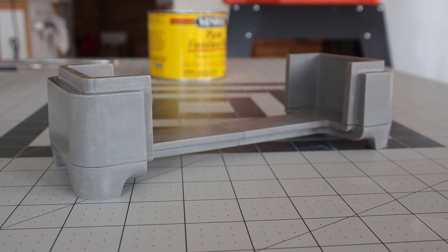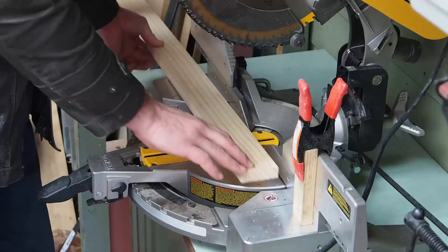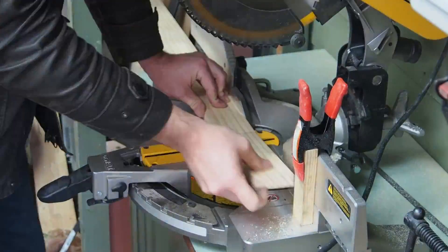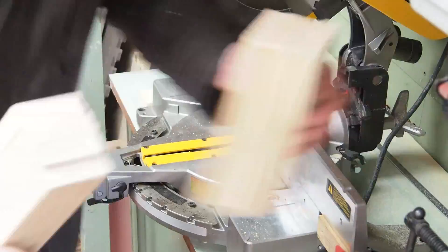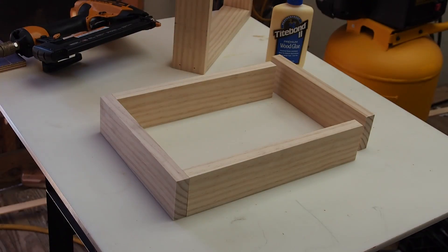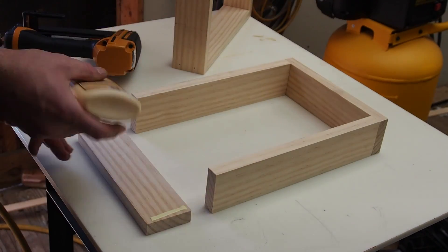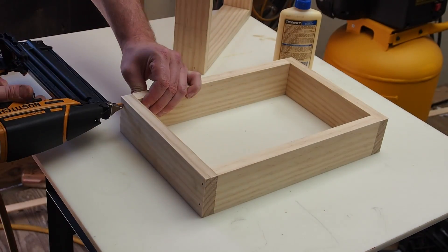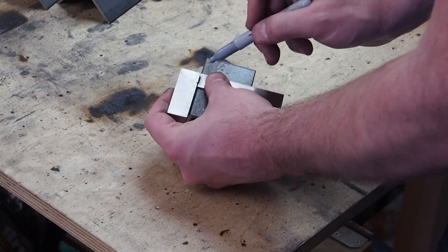With the pattern complete, I will need to make a box for the sand mold. I will initially put this together with glue and brad nails. To strengthen the box, I am using some scrap 2-inch steel angle for the corners.